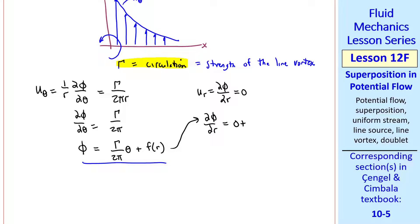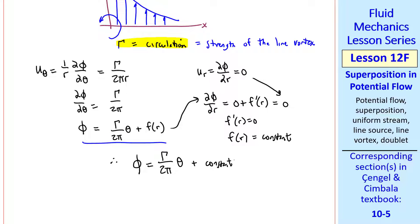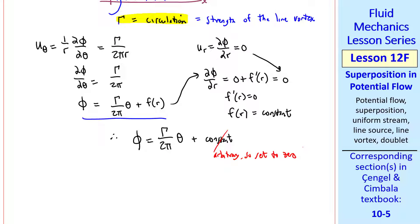But from our equation, del phi del r equals 0 plus f prime of r. Setting this to 0, we integrate and get that f r is just a constant. Therefore, phi is gamma over 2 pi times theta plus a constant, which is arbitrary, so we set it to 0. Similarly, psi is negative gamma over 2 pi times natural log of r.